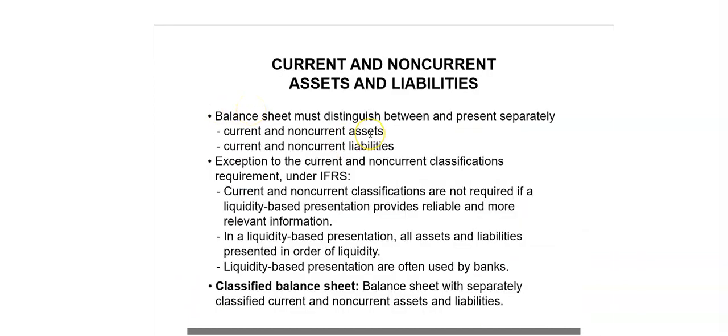It is important for the balance sheet to distinguish between current and non-current assets and current and non-current liabilities and present them separately. Separate presentation enables analysts to examine a company's liquidity position at the end of the financial period. Both IFRS and US GAAP require that the balance sheet distinguish between current and non-current assets and liabilities — such balance sheets are generally referred to as classified balance sheets. However, under IFRS, this classification is not required if a liquidity-based presentation provides more reliable and relevant information.